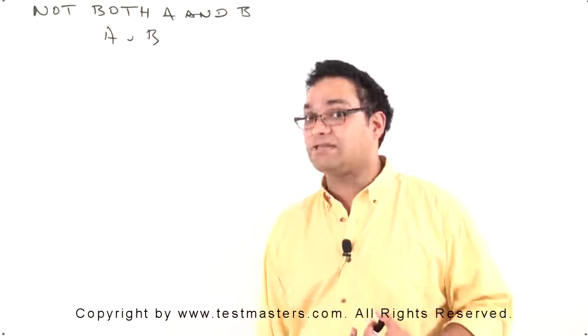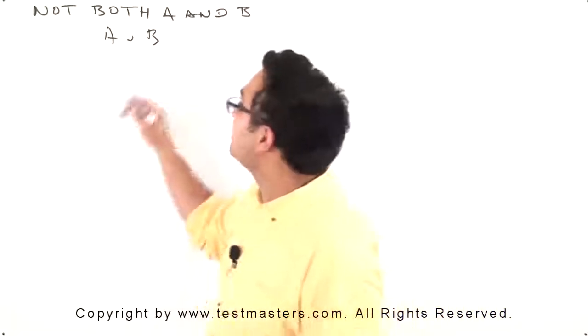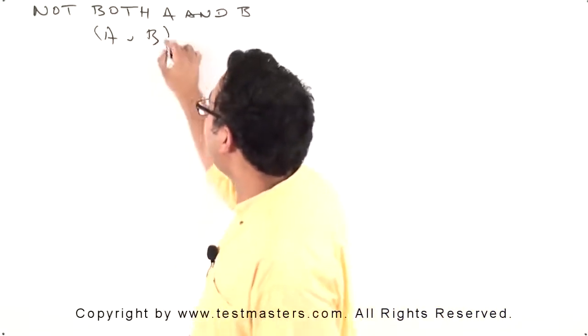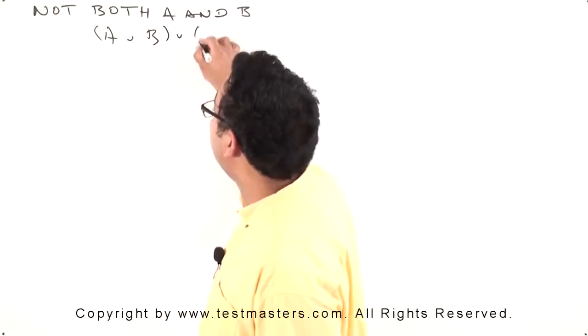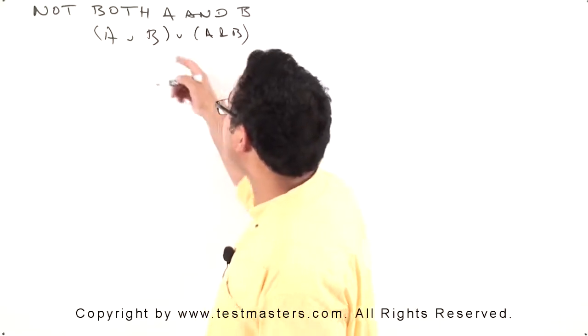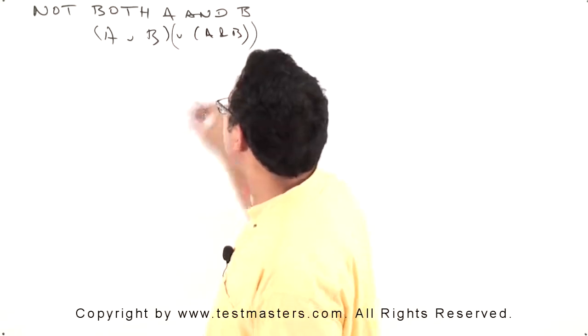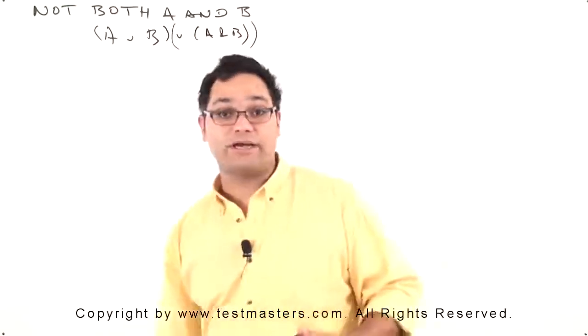In fact, any time you see an or, what you're really looking at is this: A or B, or both A and B. And of course, this part is understood. It's implied, always.